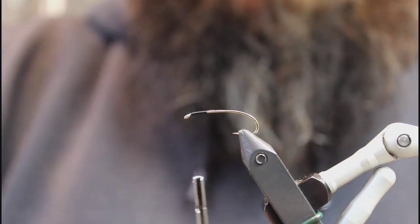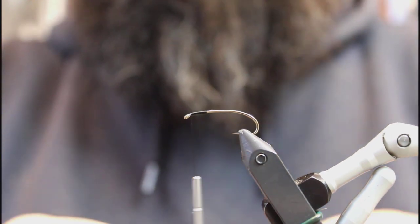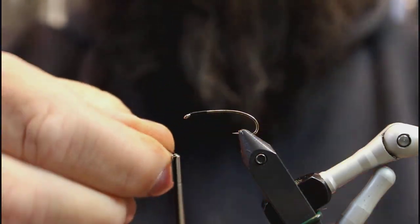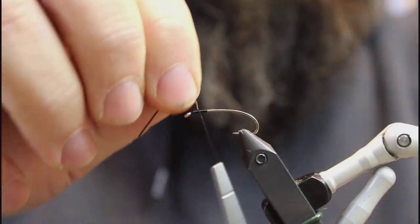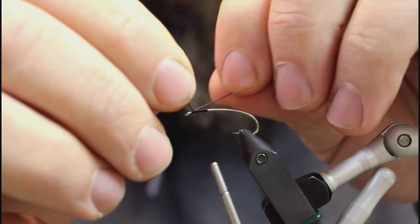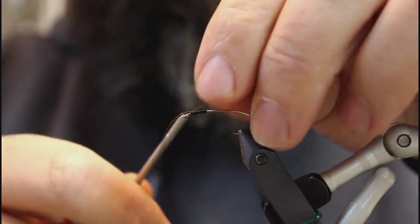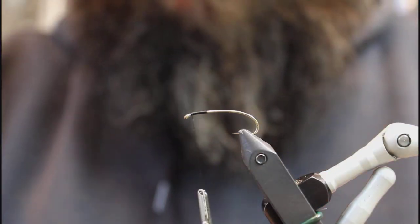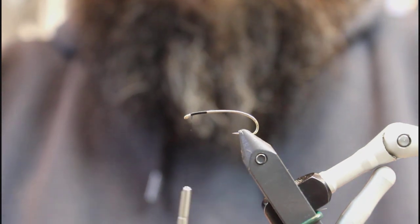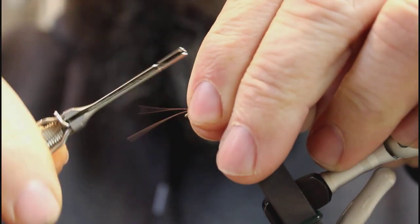We're going to take a fine rubber leg for our antenna here in brown, kind of get that in place where we want it. Take our fine rubber leg here in brown, get it laid on the hook here, get it secured in place.